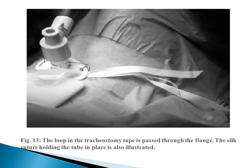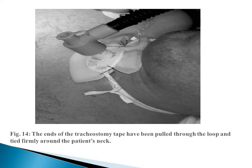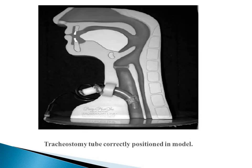The tracheostomy tube is taken and first held at 90 degrees to the hole created in the trachea, then after insertion it lies parallel to the trachea. The loop of the tracheostomy tape is passed through the flanks, and silk sutures hold the tube in place. The tape ends are pulled through the loop and tied firmly around the neck of the patient. Finally, the tracheostomy tube is correctly positioned, as demonstrated on the model.